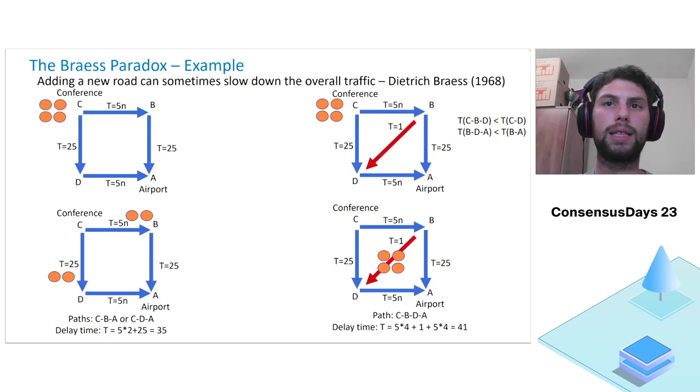We notice, under this situation, no user can change his path and choose another path that will improve his state. The minimum time it will take each person is 41 minutes, and as we saw, that's more than before where it took 35 minutes. To conclude, we added a road between B and D, and the result was it took more time for each person to get from C to A.